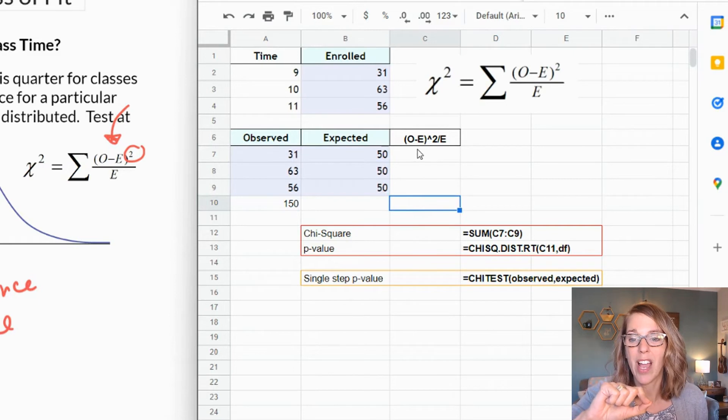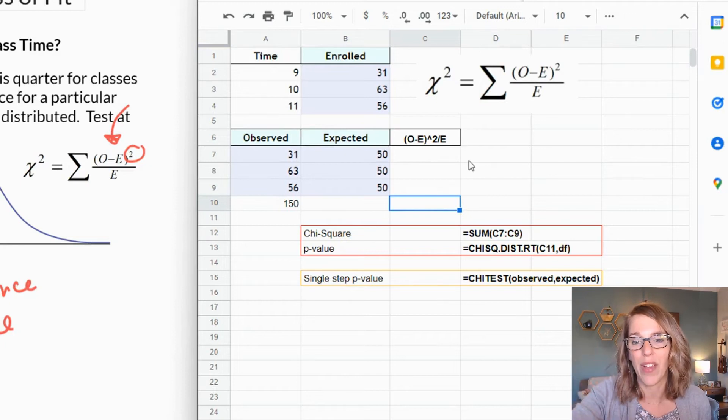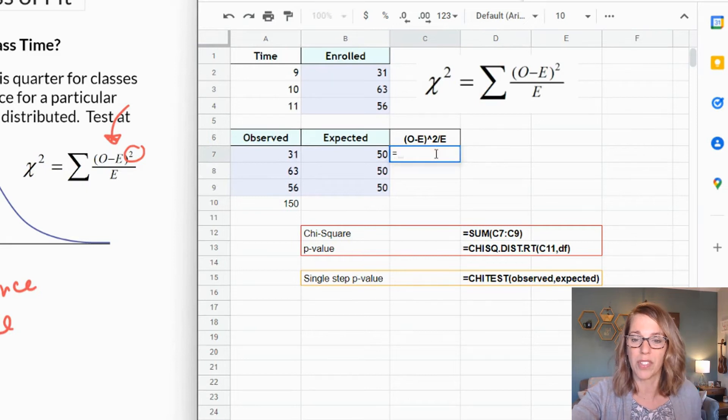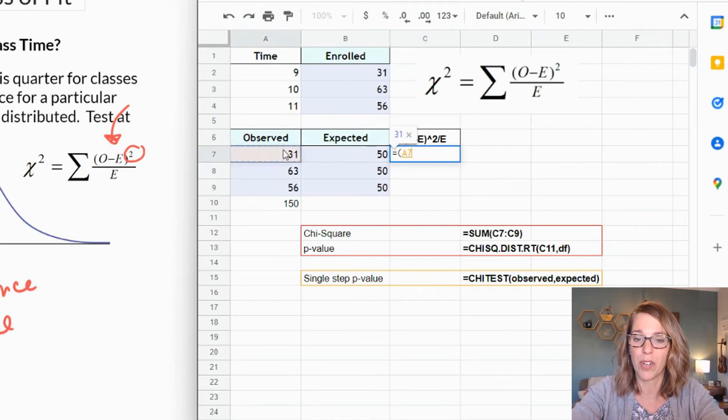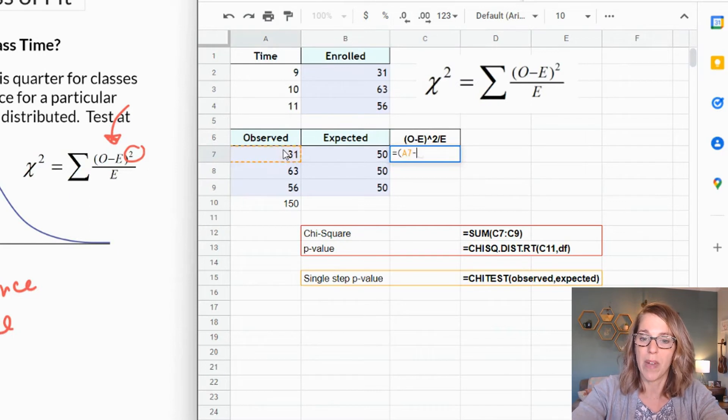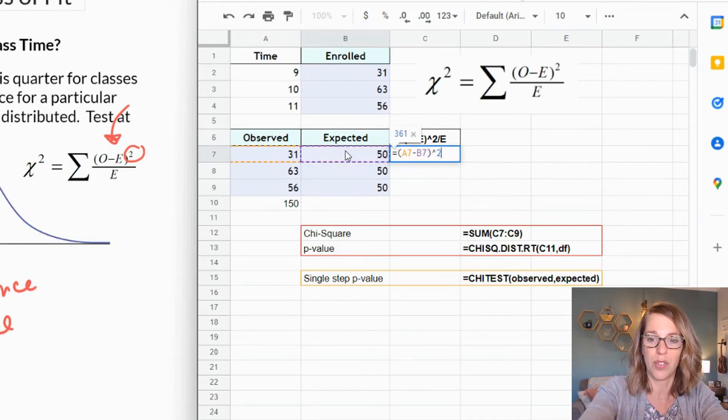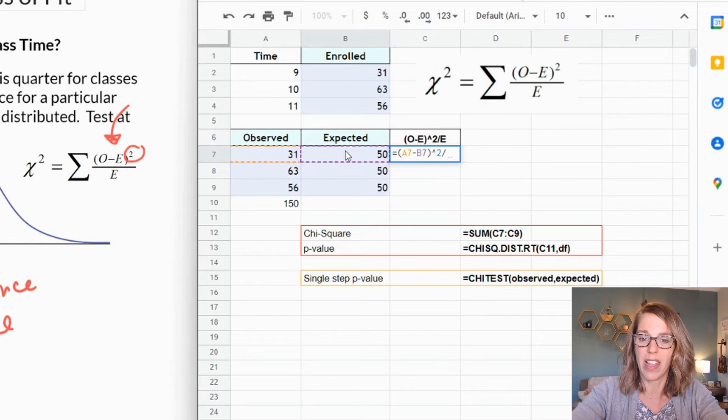Next I want to do my observed minus expected squared. I'm working toward the chi-square measure. I'm going to have one of these fractions for each of my data values, and then I'm going to add all of those values together. I'm again going to do this using a formula, so I'm going to go equals and I want to do exactly what I see at the top of that column. So equals parentheses, I'm going to grab my first observed value and click on it, minus my second value which is the expected value, click on it, parentheses squared so caret 2, and then divided by and then I'm going to click on my expected value again and hit enter.